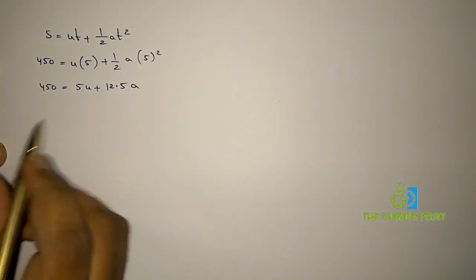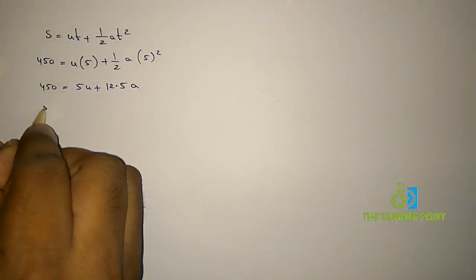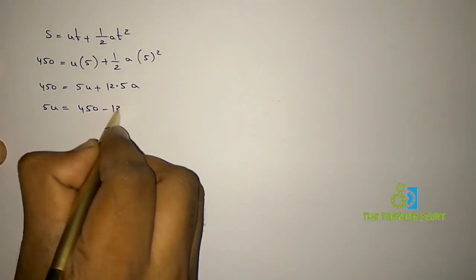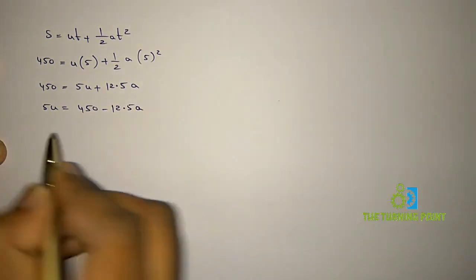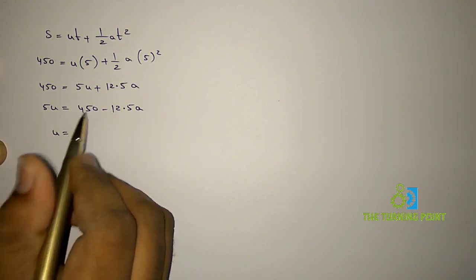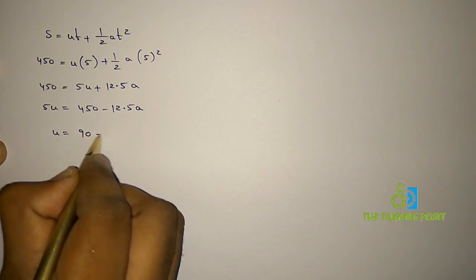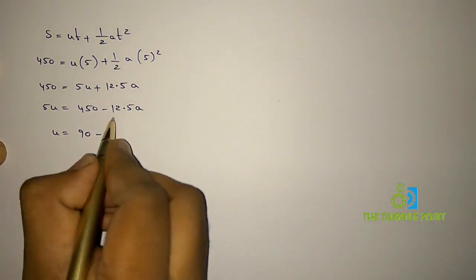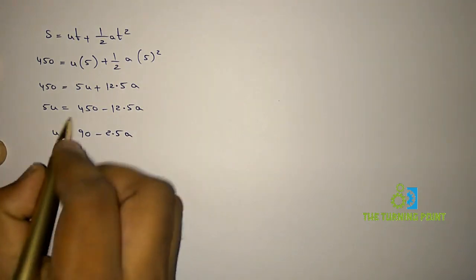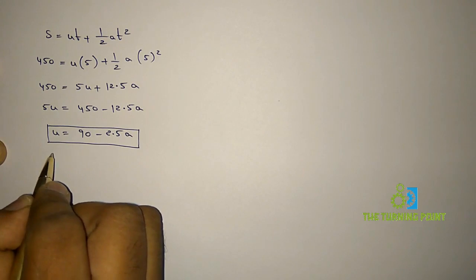Now solving for initial velocity u: 5u = 450 − 12.5a, so dividing by 5, u = 90 − 2.5a. This is the relation for initial velocity from the first interval.